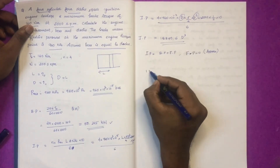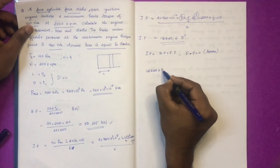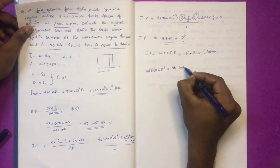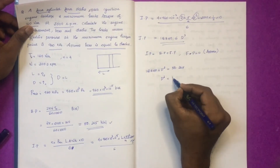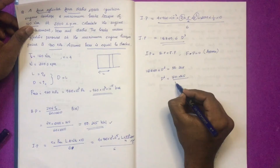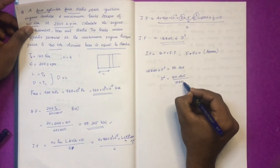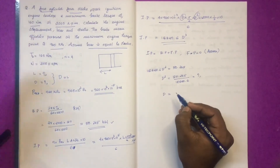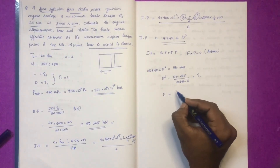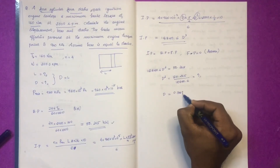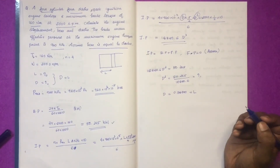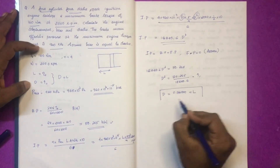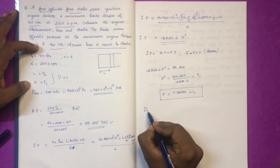The indicated power IPN is 18849.6. The brake power is 50.265 kW. Solving, D is equal to 0.1387 m.